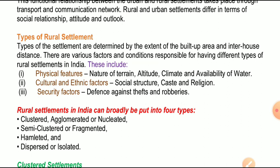दूसरा है cultural and ethnic factors - जो सांस्कृतिक और सामाजिक कारक होते हैं, जैसे social structure कैसा है, वहां की सामाजिक संरचना कैसी है, caste और religion की क्या condition है। Then security factors - वहां सुरक्षा से संबंधित कौन से तथ्य पाए जाते हैं, जैसे चोरी-डकैती से बचाव हो सकता है या प्राकृतिक आपदाओं से बचाव - इस तरह की सुरक्षा की सुविधाएं वहां के settlement पर असर डालेंगी।